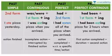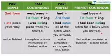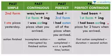We combine these two into the past perfect continuous tense. For example: 'I had been eating pizza for two hours when you arrived.' The first action was continuing and then completed when the second action happened.